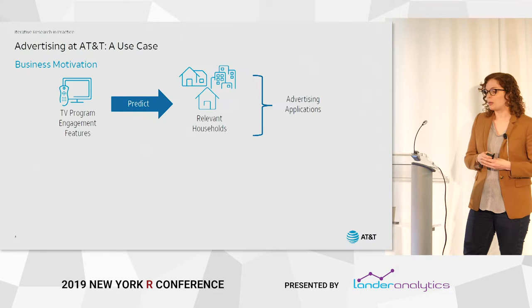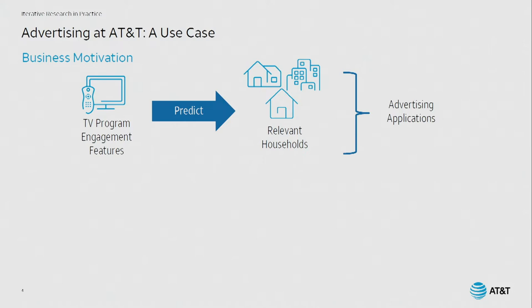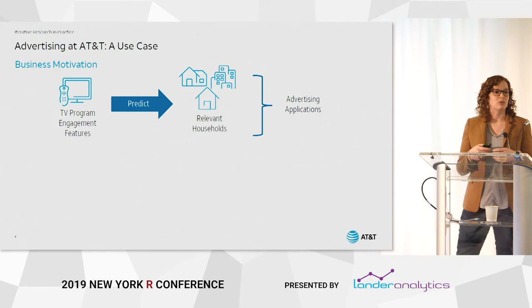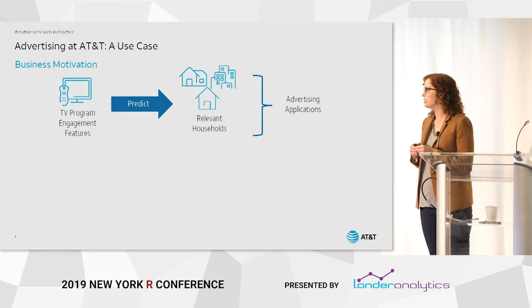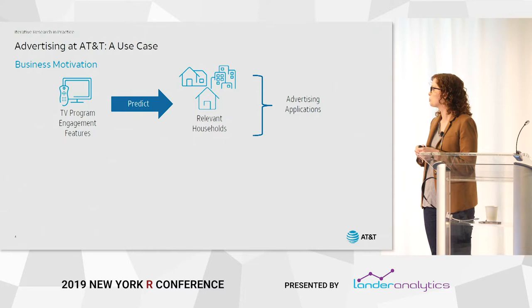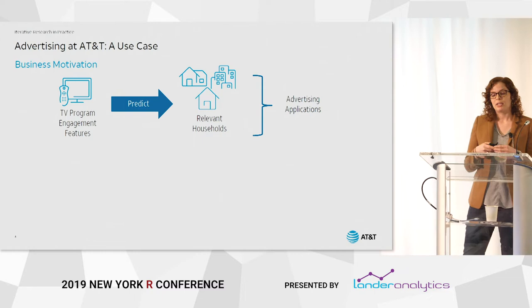Starting with the problem statement: AT&T serves over 20 million households with advertising across its cable platforms. We have DirecTV satellite with a set-top box, DirecTV Now as the streaming service, and U-verse as a cable equivalent in certain parts of the country. For DirecTV satellite, a certain fraction of households have return path set-top box capabilities, meaning their set-top boxes return data to us so we can learn about preferred programs and viewing habits.